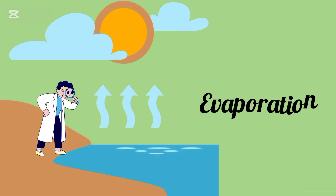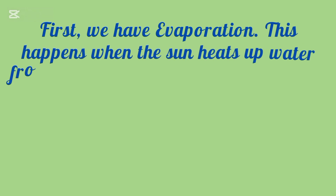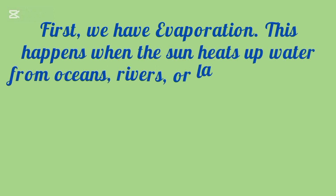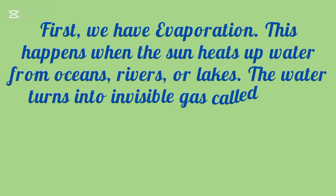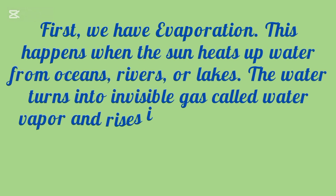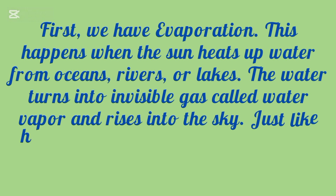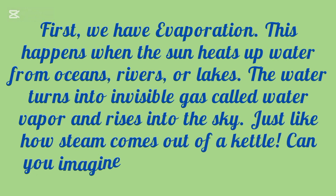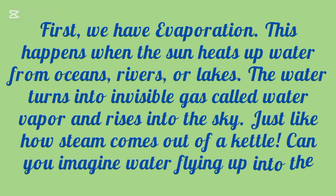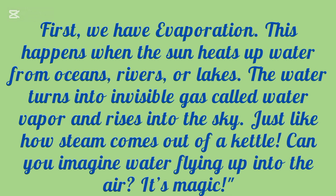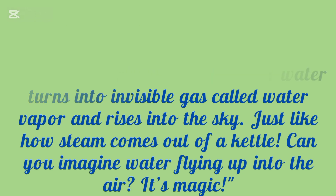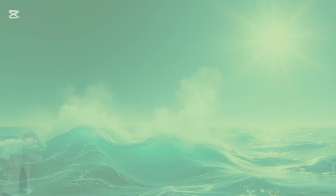First, we have evaporation. This happens when the sun heats up water from oceans, rivers, or lakes. The water turns into invisible gas called water vapor and rises into the sky — just like steam comes out of a kettle. Can you imagine water flying up into the air? It's magic!